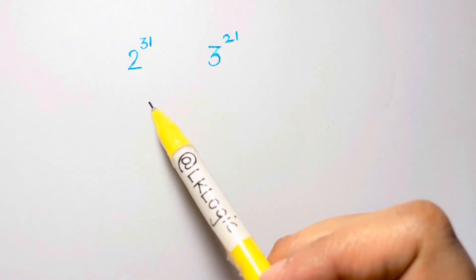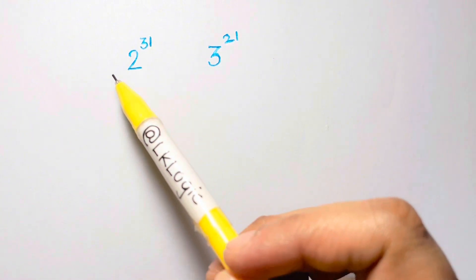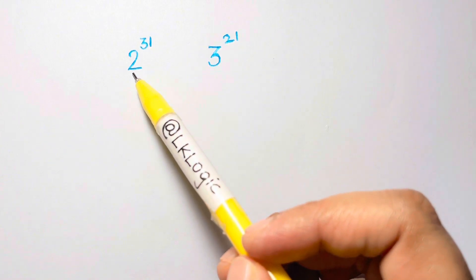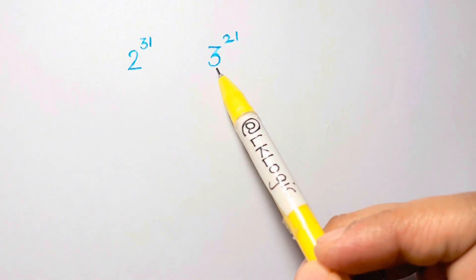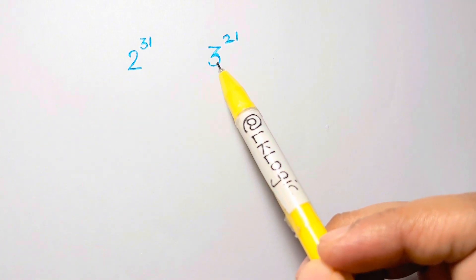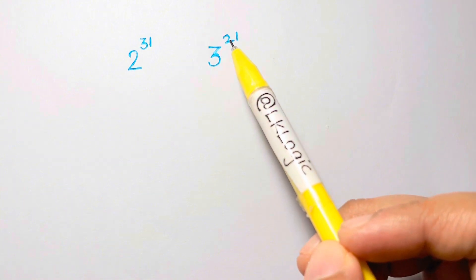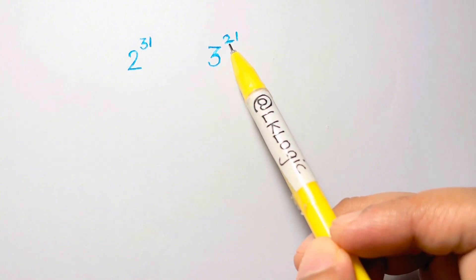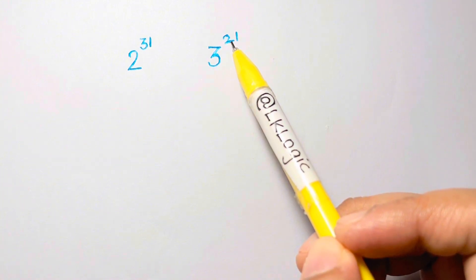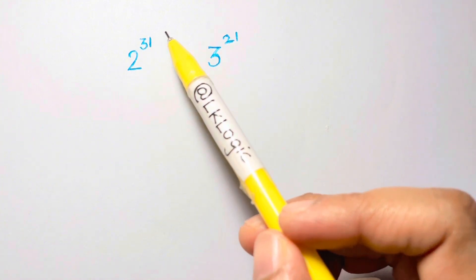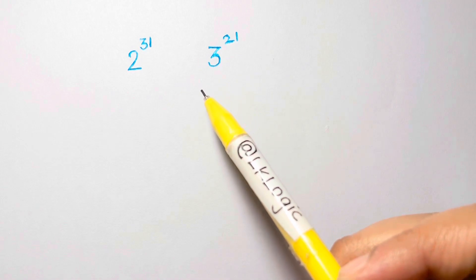The first step is to do inspection. The bases here are different and the exponents also have different values. So what should we do first?